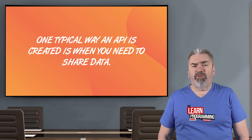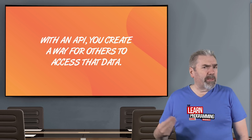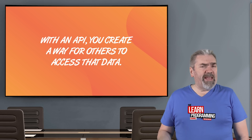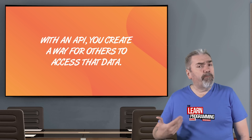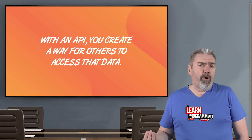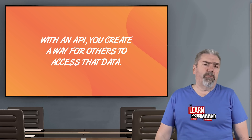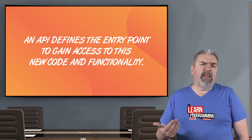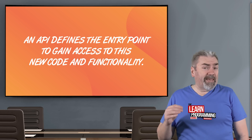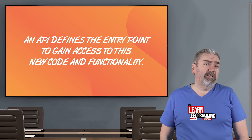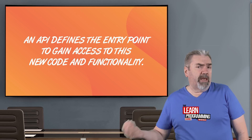You might create a basic program that tracks or stores some information and you want to start sharing that information with others. You would create an API — an Application Programming Interface — that defines and gives a method or a way for other programmers or other programs to get access to your code, to your data from your program. It's just a typical way that you would give people access to that data, defining an entry point to get access to it.